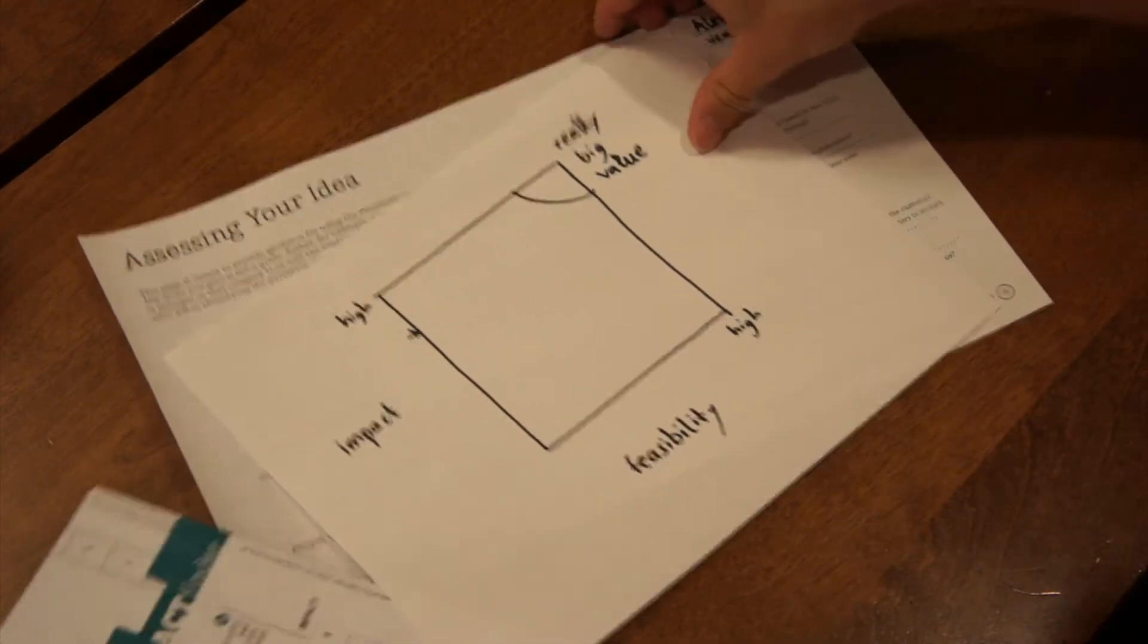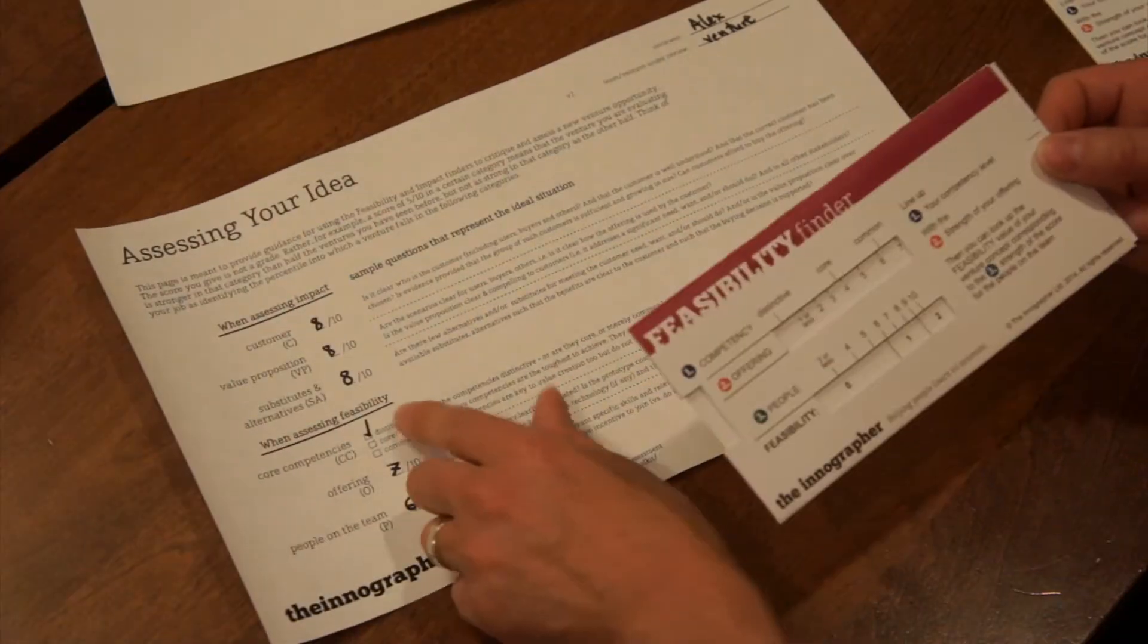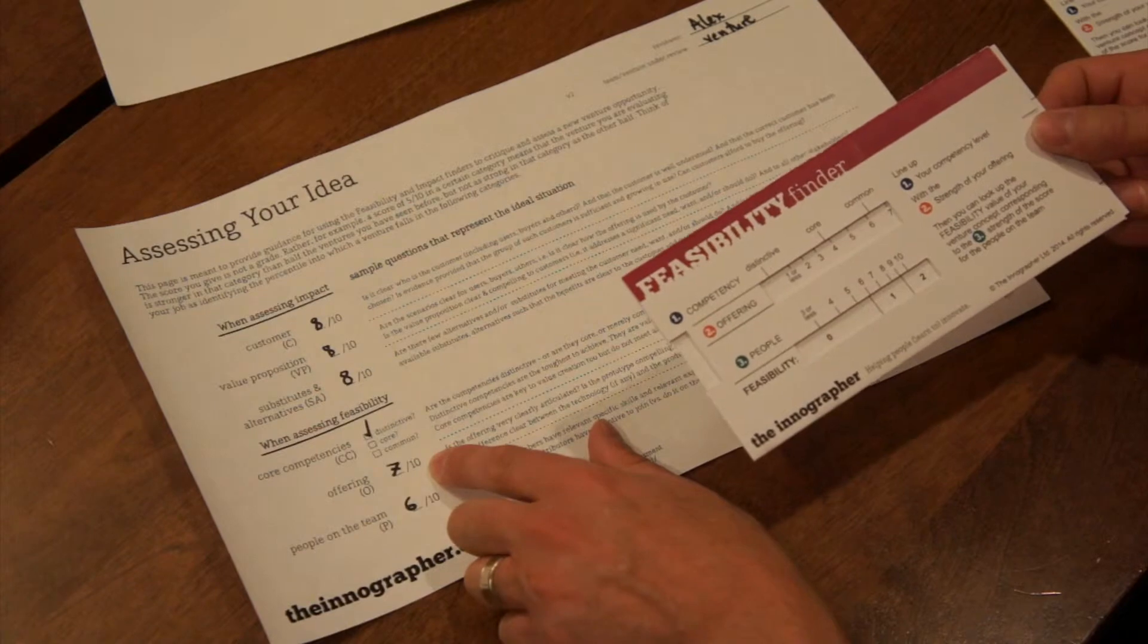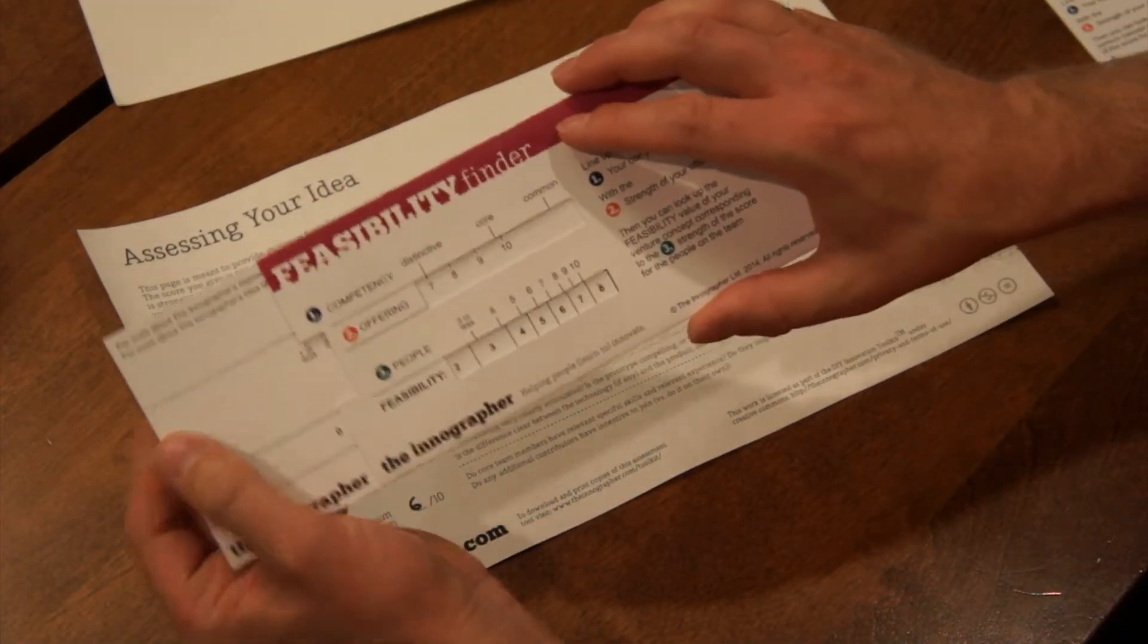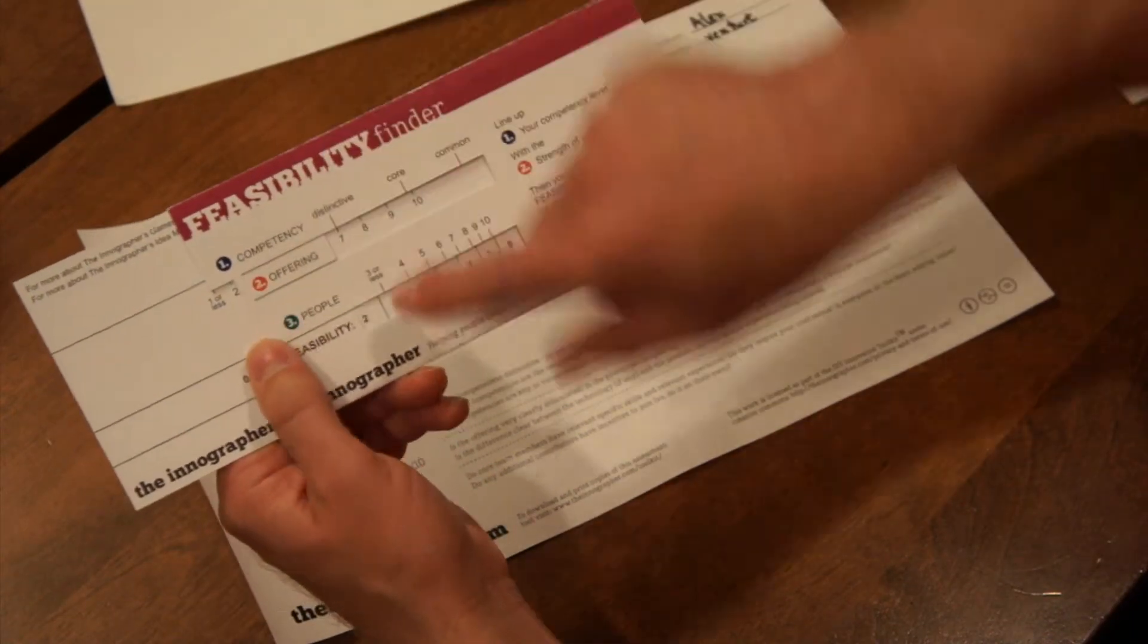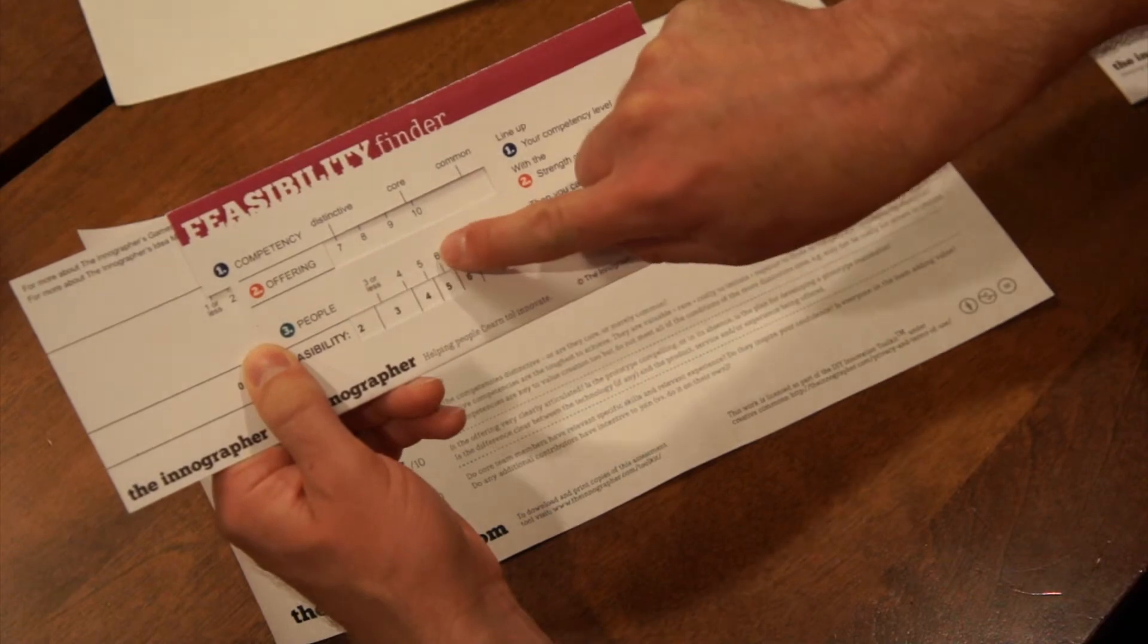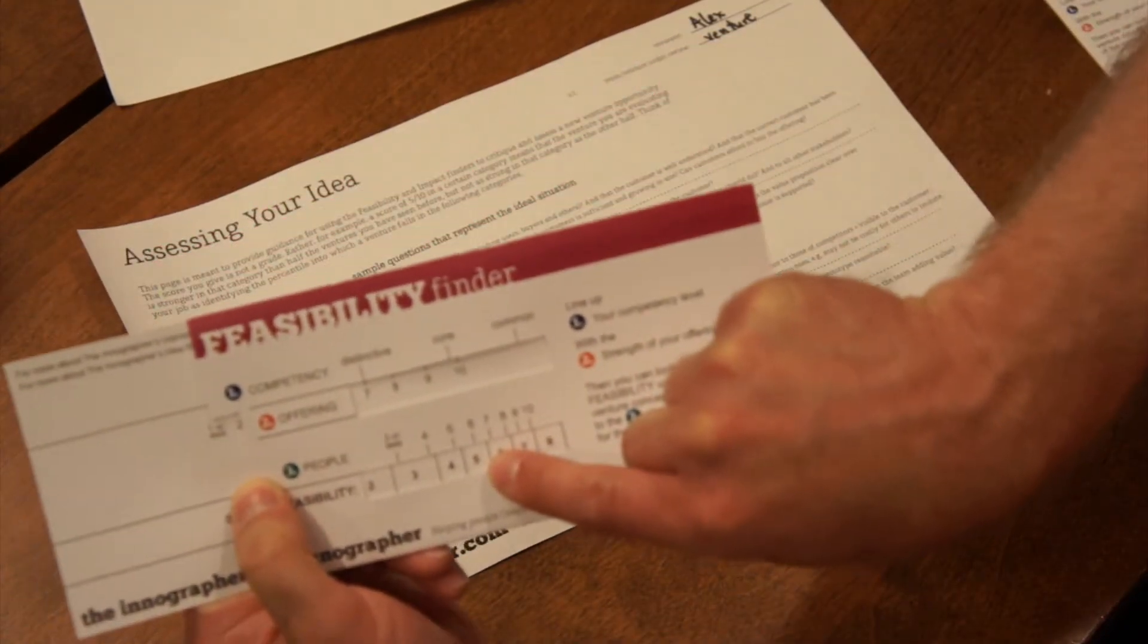And then they would do the same thing, using the feasibility finder, they have distinctive and offering of seven, and people on the team, so they slide distinct with an offering of seven, so they line up, they then go to the people on the team being roughly six and they get a feasibility score of five out of ten.